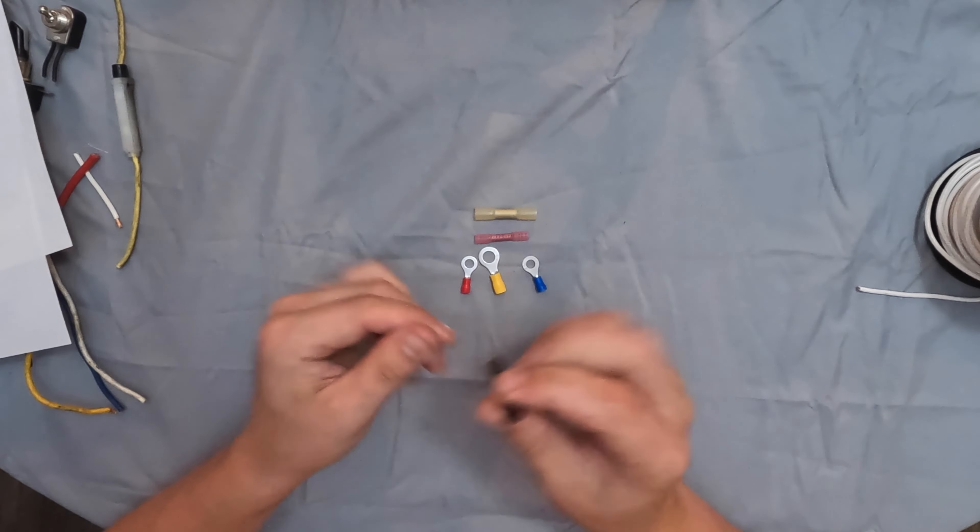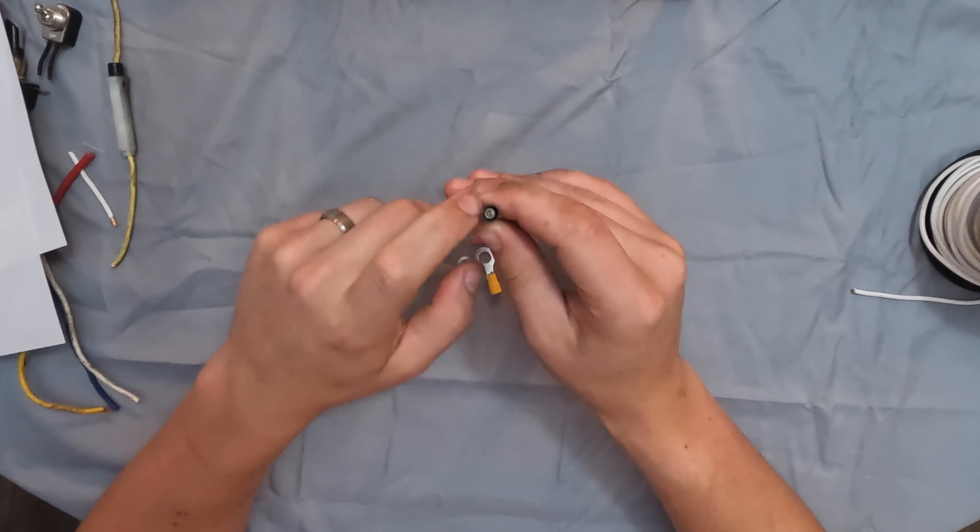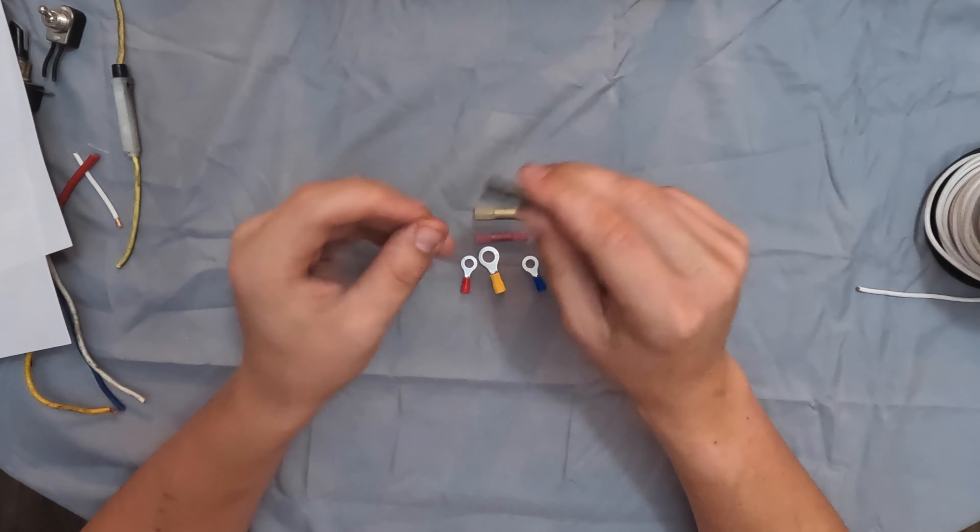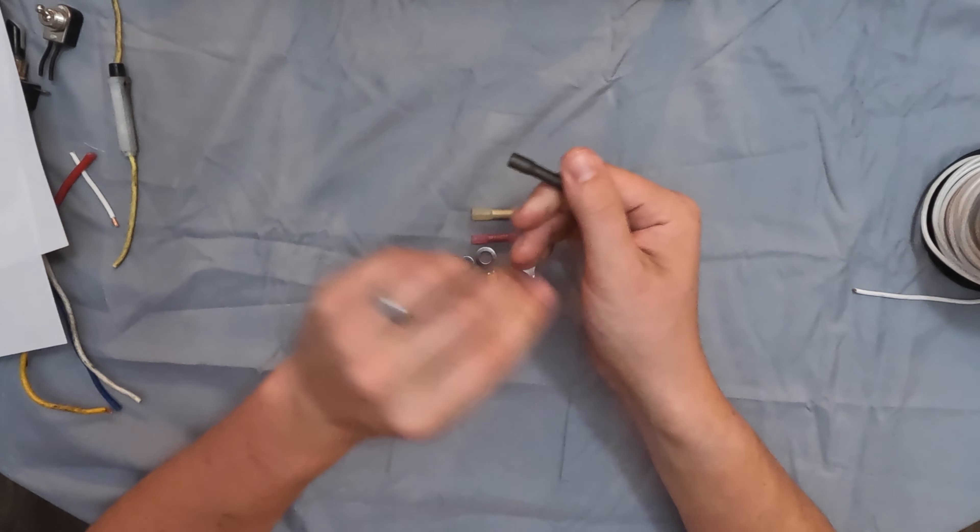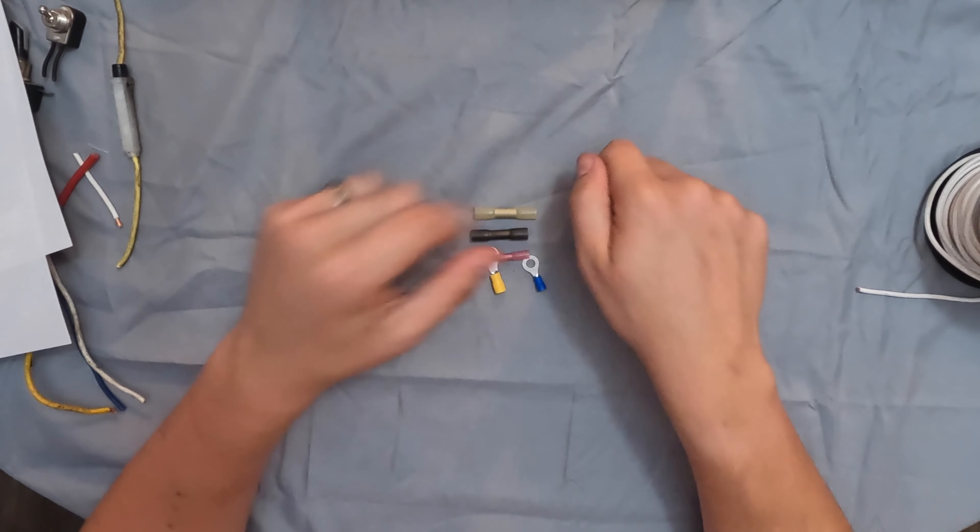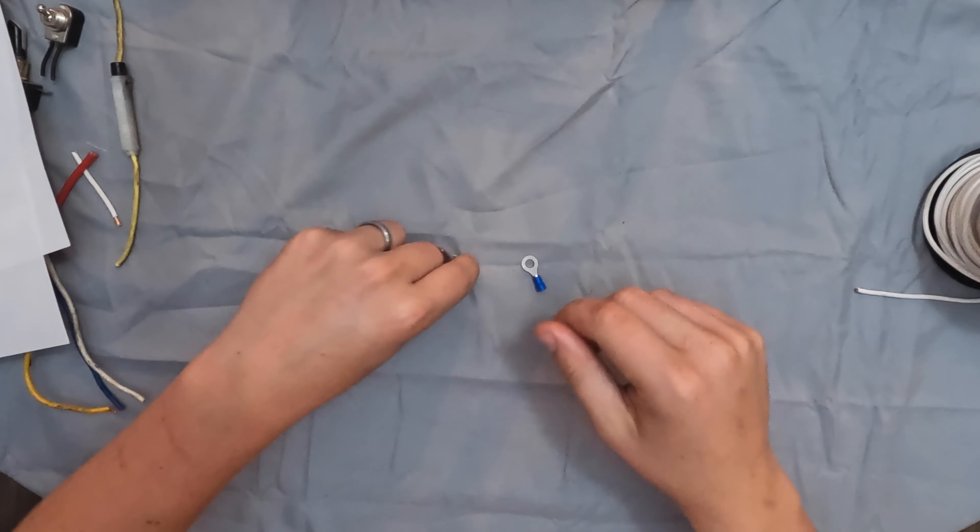And then we have another connector here. And this one's not labeled, but really you don't need it to be labeled. You just want to make sure that your stripped wire, so the exposed ends, fits snugly inside of the metal piece. And then when we crimp it down, I love the heat shrink style. So I just take my heat gun, get them nice and warm. And then they'll shrink down, create a nice waterproof seal over the wires. And your connection is nice and secure.